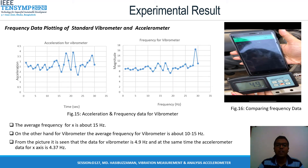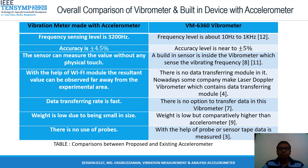Figure 15 shows the acceleration and frequency data for the vibrometer. The average frequency for the X-axis is about 15 Hz. For the vibrometer, the average frequency is about 10 to 15 Hz. From the data, it is seen that the vibrometer reading is 4.9 Hz, and at the same time, the accelerometer data for the X-axis is 4.37 Hz. Now let's discuss the comparison of our vibrometer made with the accelerometer versus the standard vibrometer VM6360.